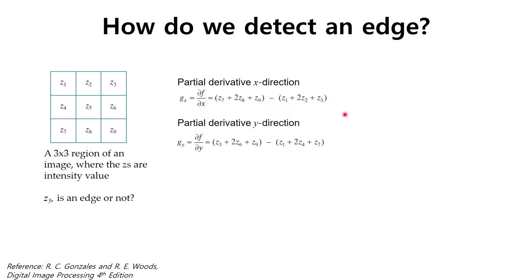We need to calculate the difference in the x direction as well as in the y direction. The partial derivative in the x direction simply calculates the difference between these three pixels on one side and these three pixels on the other side. Similarly, the partial derivative in the y direction calculates the difference between the pixel intensities in the top region and in the bottom region.